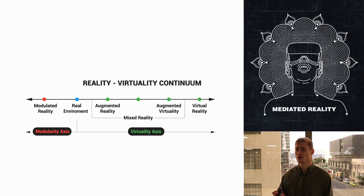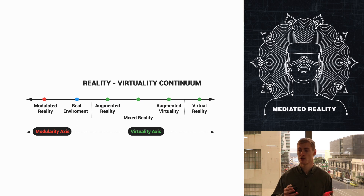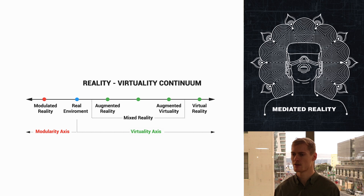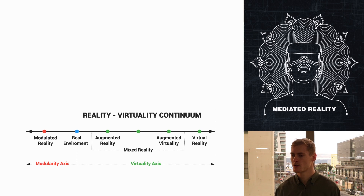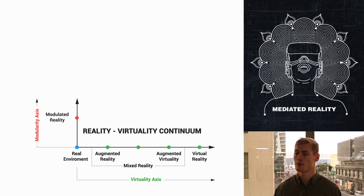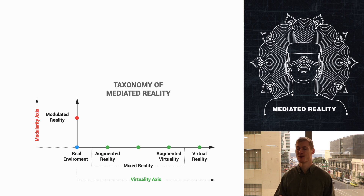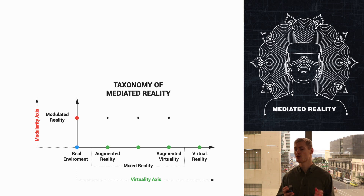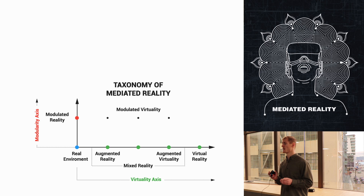Placing modularity on the continuum horizontal to virtuality works in the theoretical sense, providing that realities on the modularity axis cannot be combined with realities on the virtuality axis. However, this is not the case. To denote realities which include aspects of both modularity and virtuality, we must alter this continuum so that the modularity axis is placed vertically. The continuum can now be referred to as a taxonomy. When placed vertically, a new type of reality is introduced — a combination of most forms of modularity and most forms of virtuality. This new type of reality is therefore called modulated virtuality.